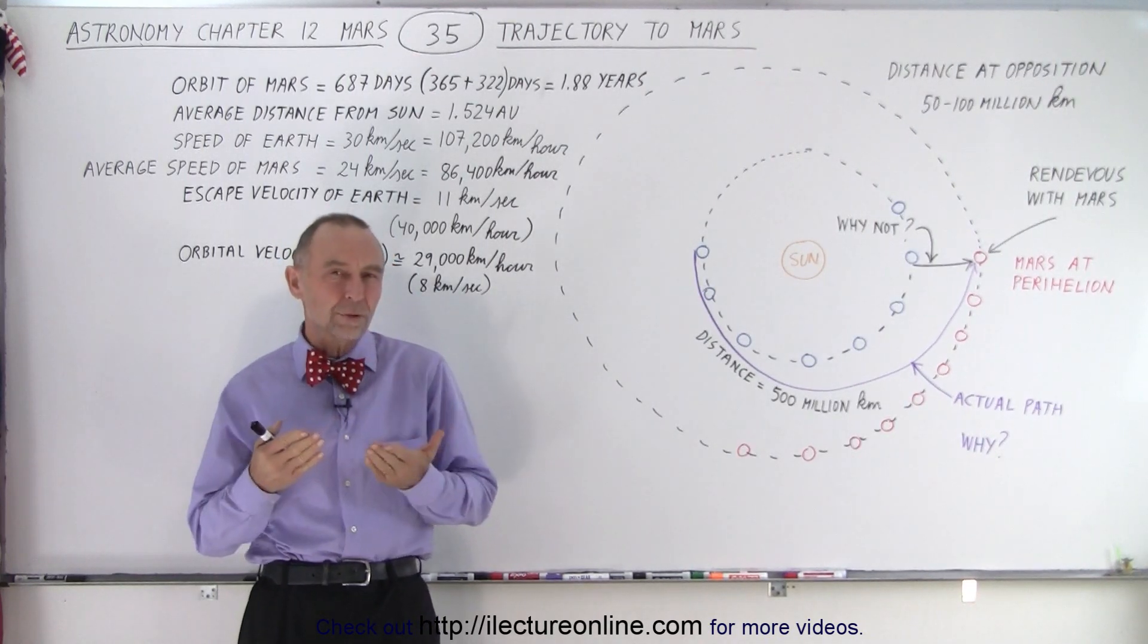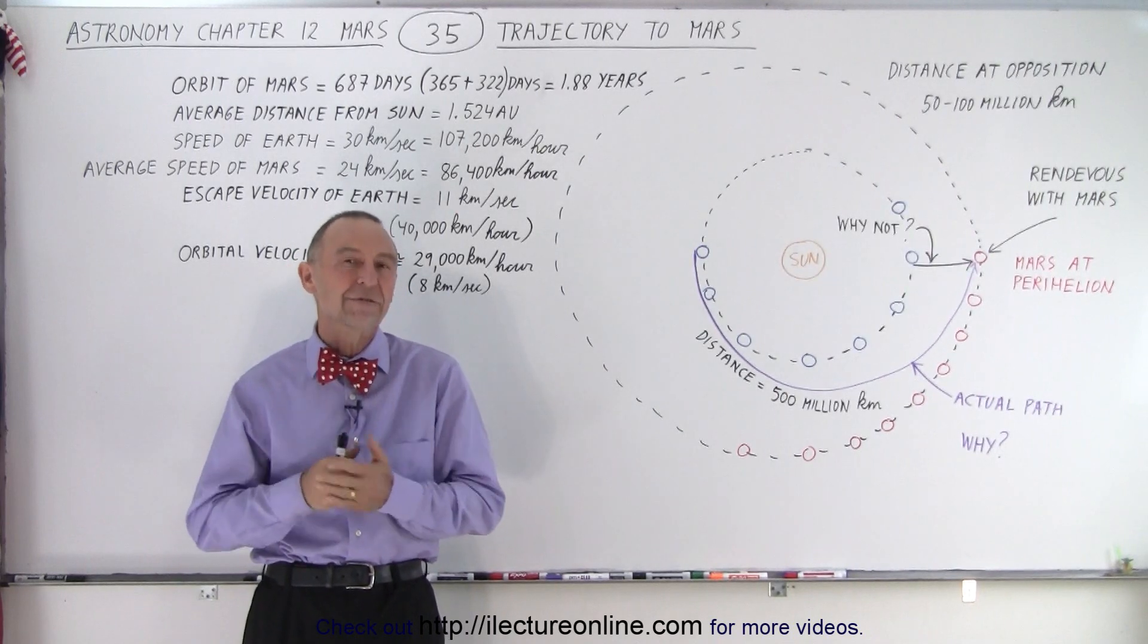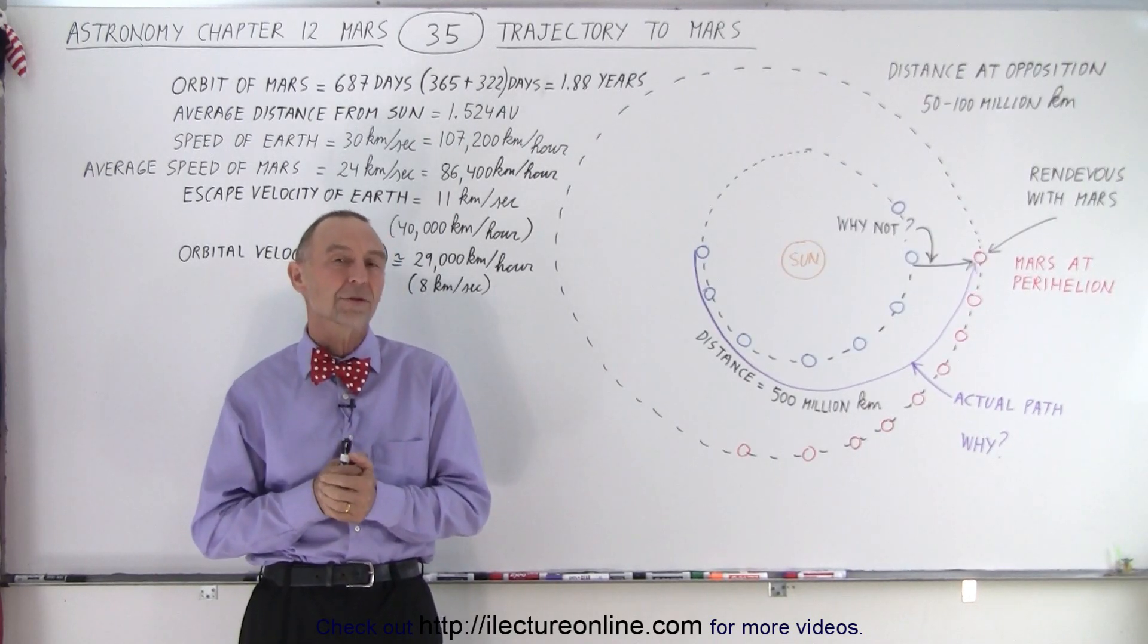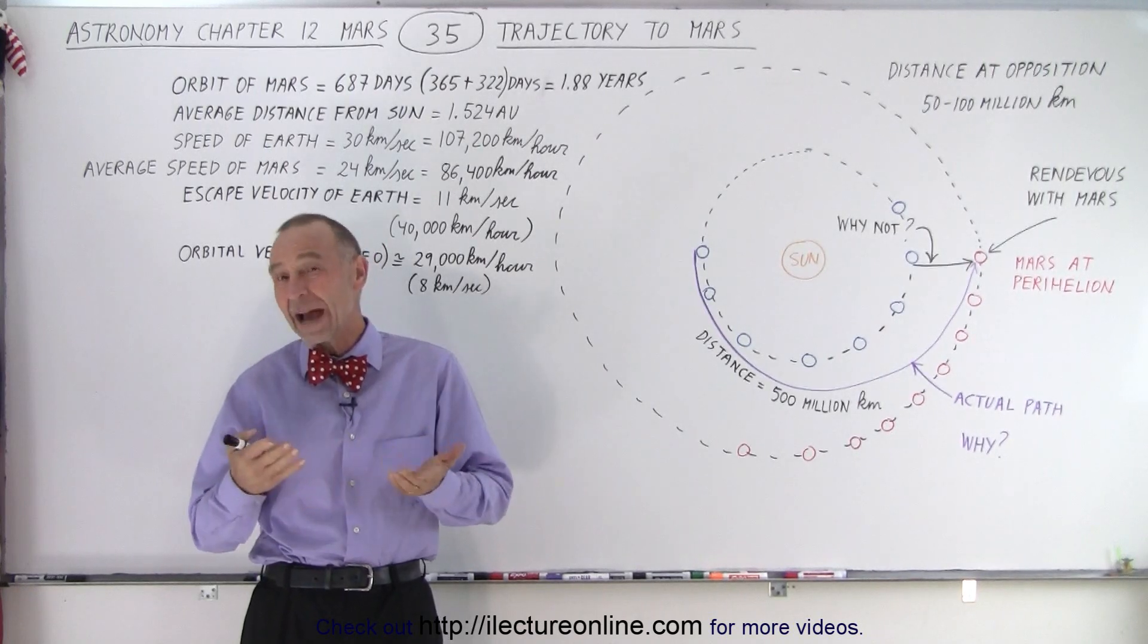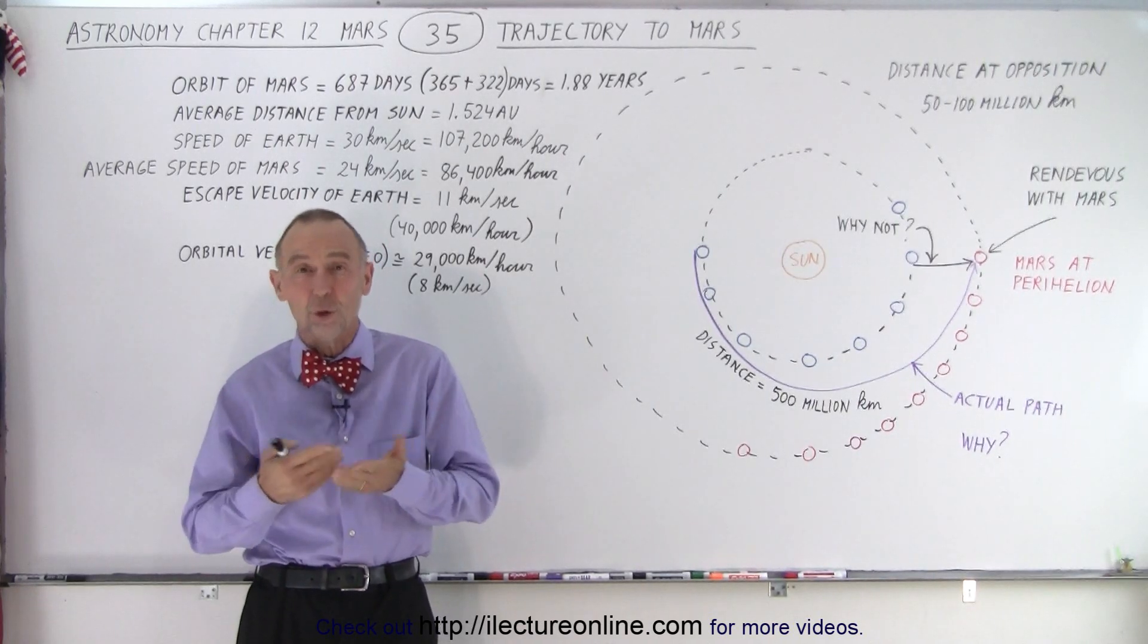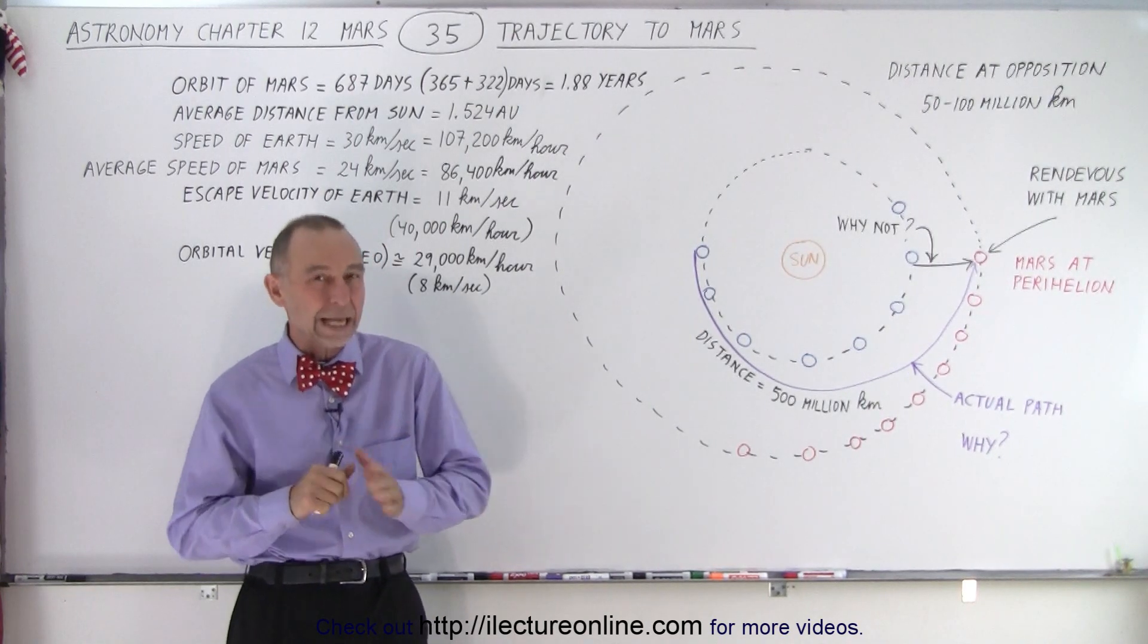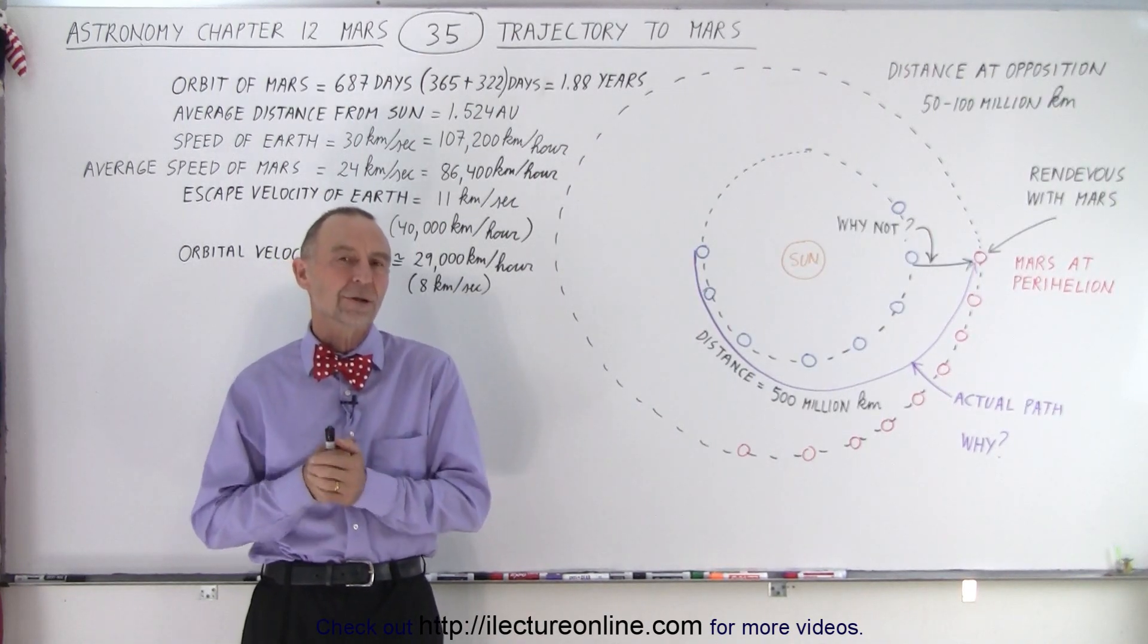So we have Earth's orbit, which has a radius of about 150 million kilometers, and then we have Mars' orbit, which is about one and a half times as large. The average orbit of Mars is about 228 million kilometers, compared to that of the Earth.